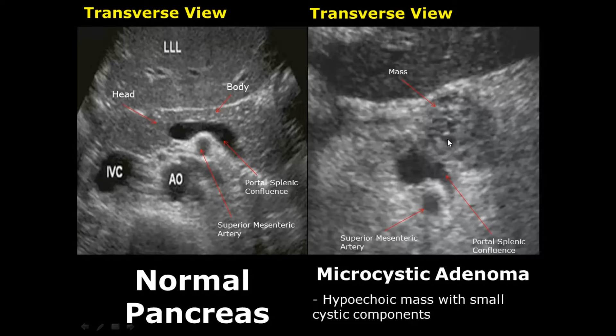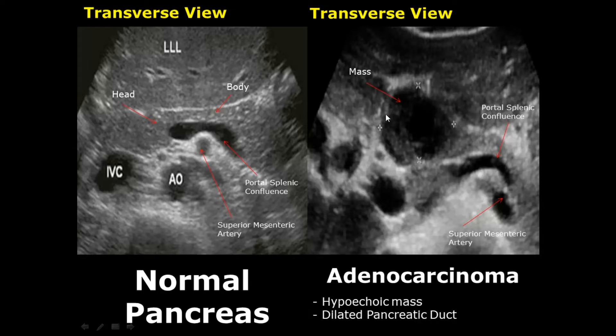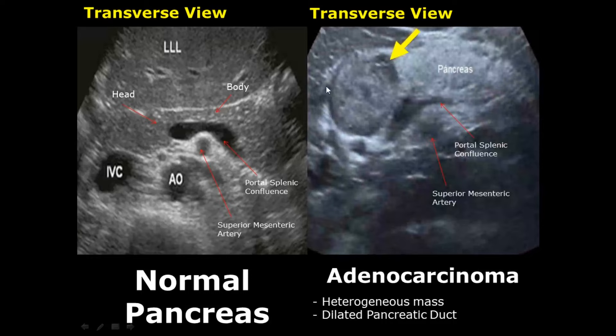Adenocarcinoma is a malignant lesion of the pancreas. Here it is occupying the head of the pancreas; it mostly has a hypoechoic appearance and can also lead to dilation of the pancreatic duct. Here is another image of adenocarcinoma — another lesion occupying the head of the pancreas. It is hypoechoic and also somewhat heterogeneous. Another mass occupying the head region is more heterogeneous and somewhat hyperechoic.